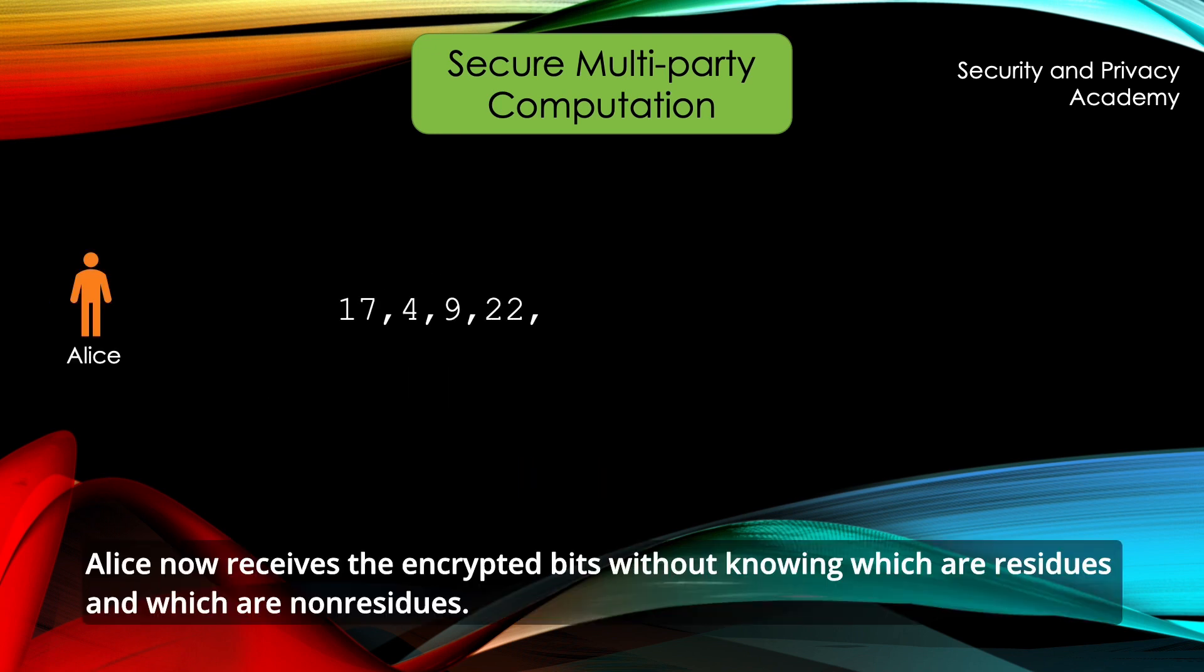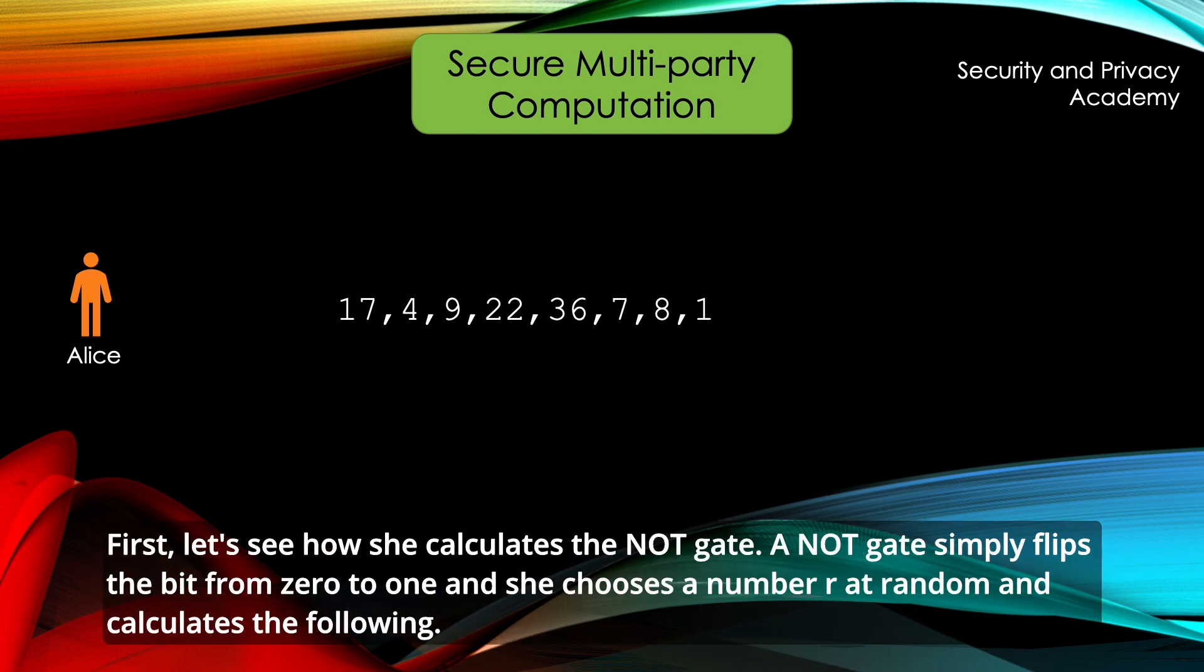Alice now receives the encrypted bits without knowing which are residues and which are non-residues. First, let's look at how she calculates the NOT gate.